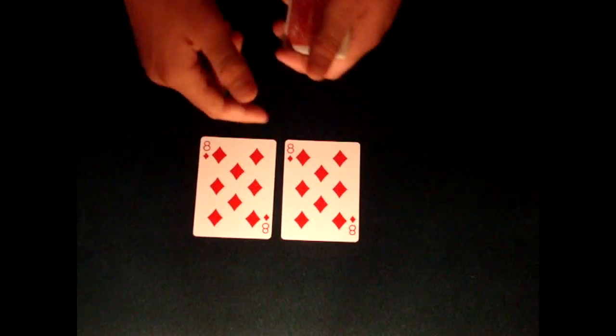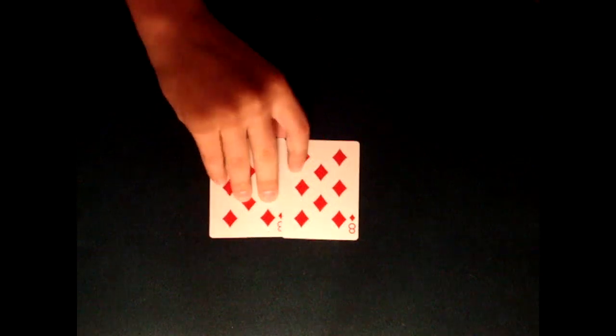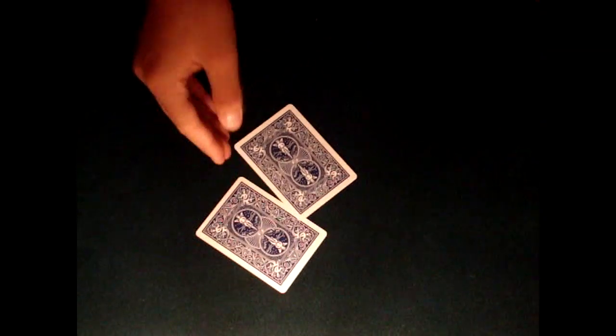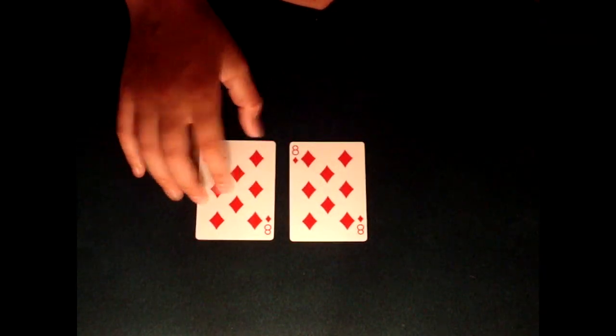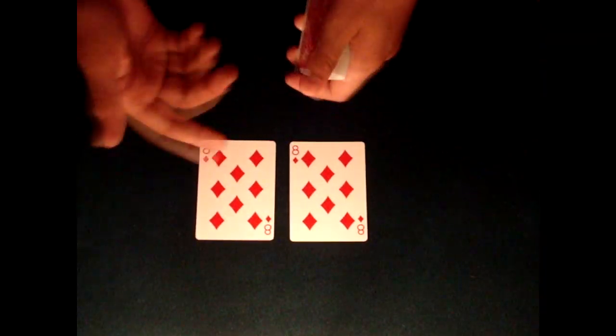But if I just wave my hands over the cards and snap my fingers, they actually both become blue. Now most people say that getting the selected card to match my prediction card is the hardest part of the trick.